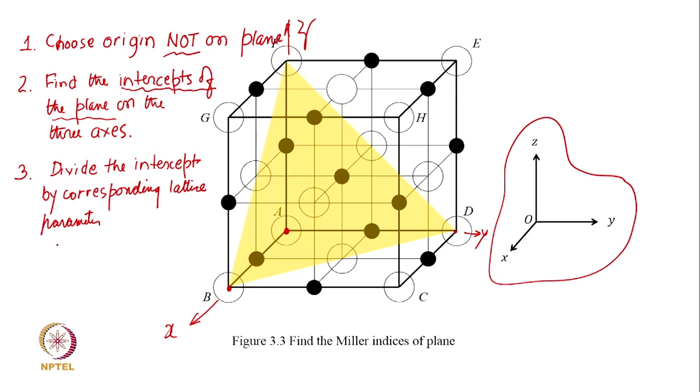The x intercept is a, y intercept is again a full b full unit cell edge length, and unit cell edge length is b, and the unit cell edge length is c where it is intercepting the z axis. Intercepts were a, b, and c, but the third step asks me to divide them by the corresponding lattice parameter. So it is the ratio. This is the relative intercept. So it becomes 1, 1, 1.